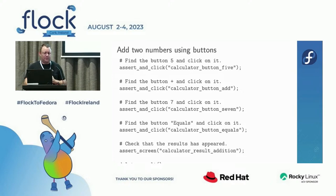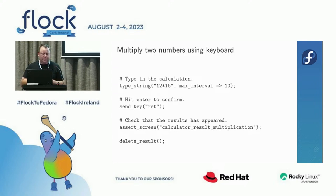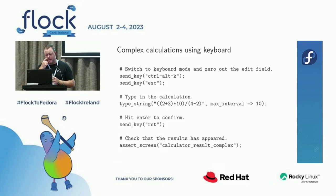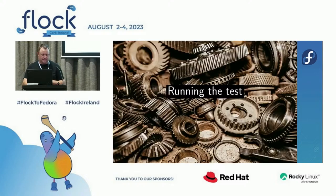The test then multiplies two numbers using the keyboard — type '12*15' with max_interval=10, hit Enter, check the result is shown, delete it, then switch to keyboard mode with Ctrl+Alt+K, type a more complex string with brackets, hit Enter, and check the result is shown. That's the complete calculator test.